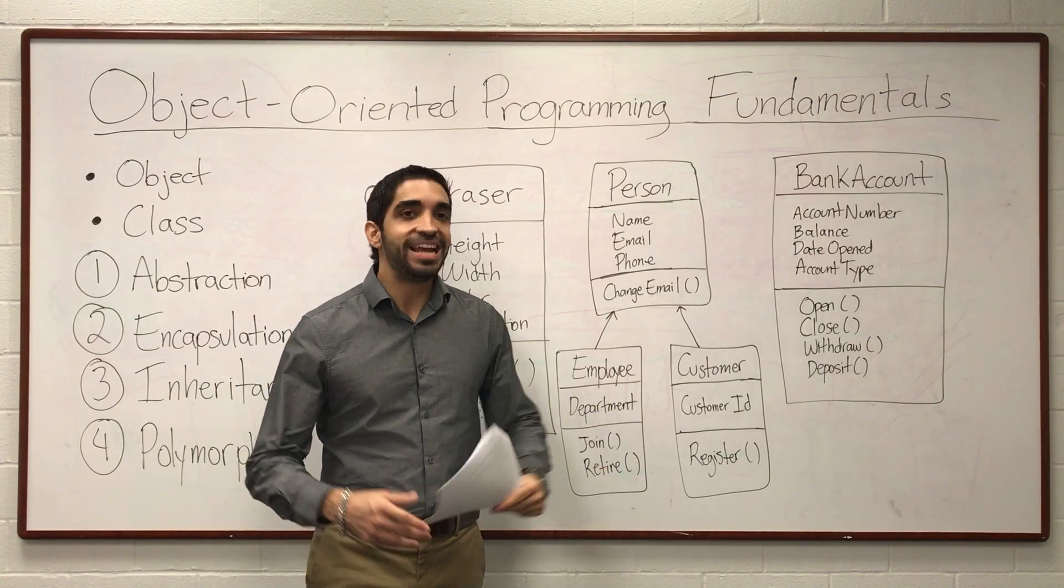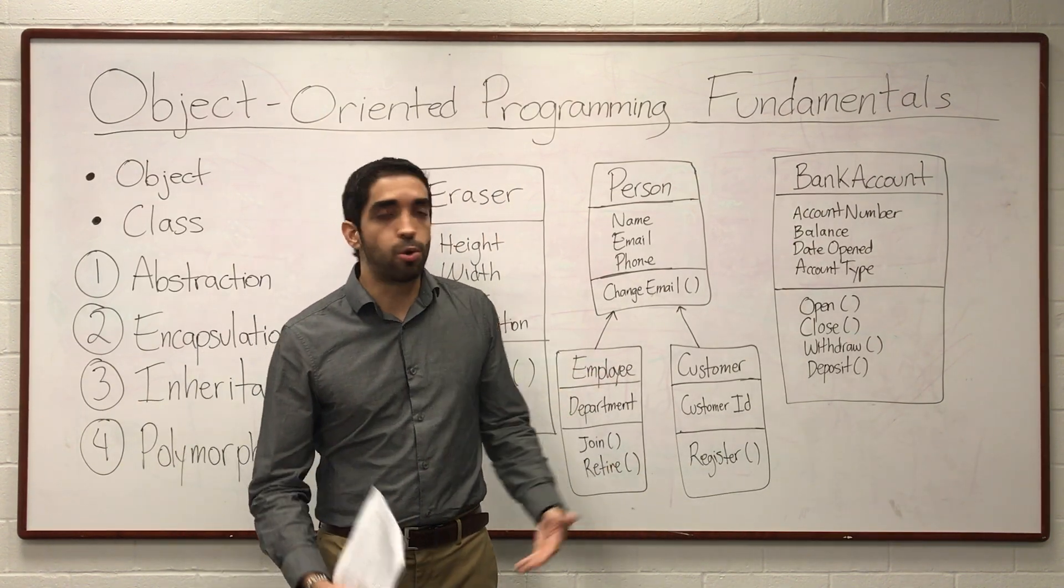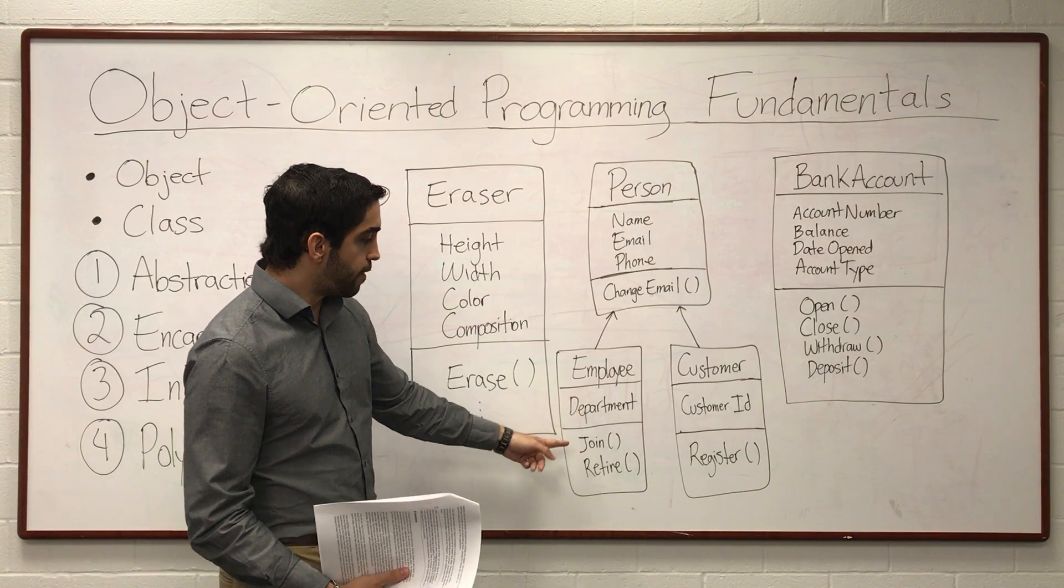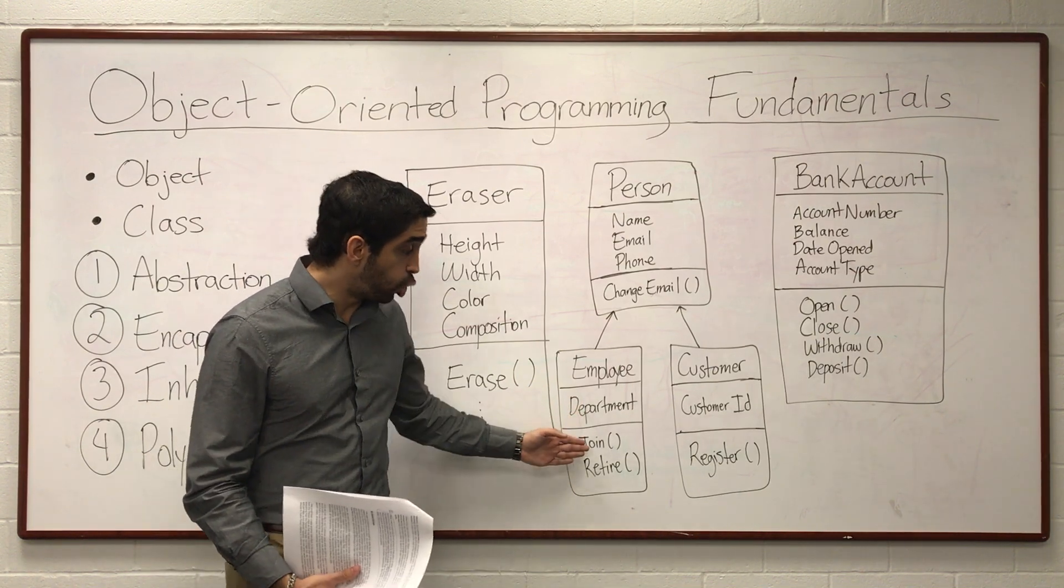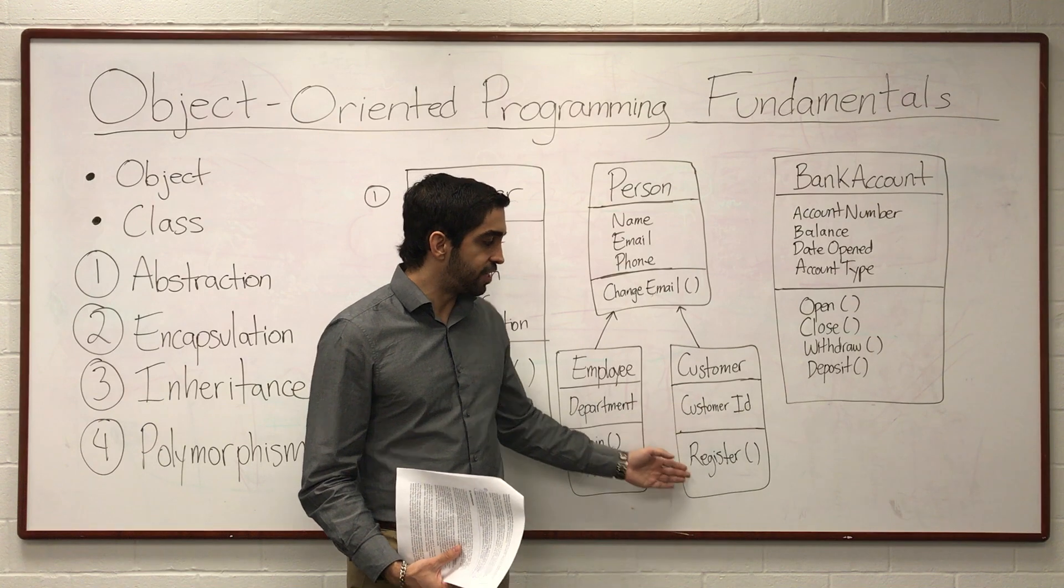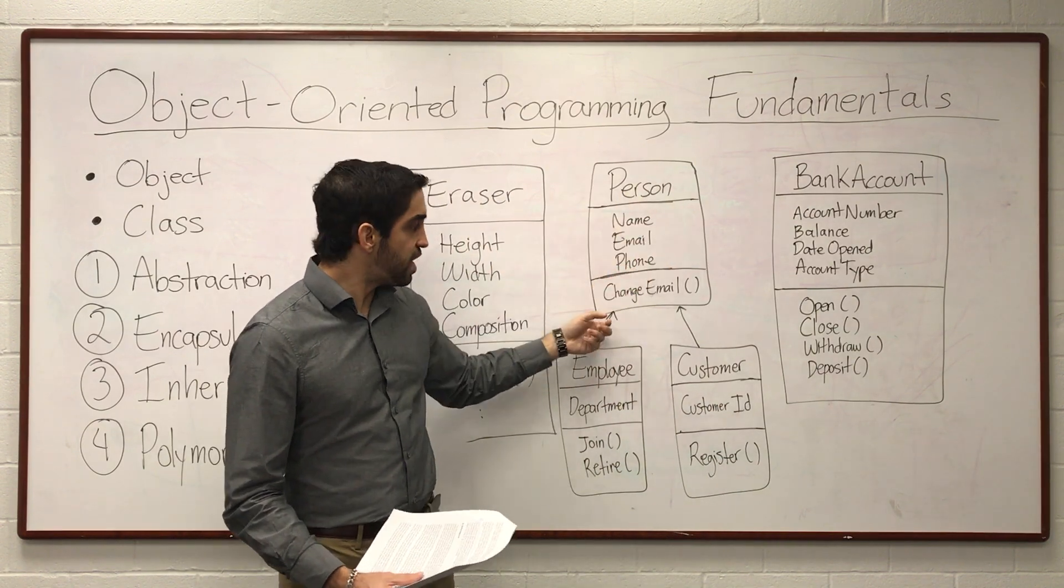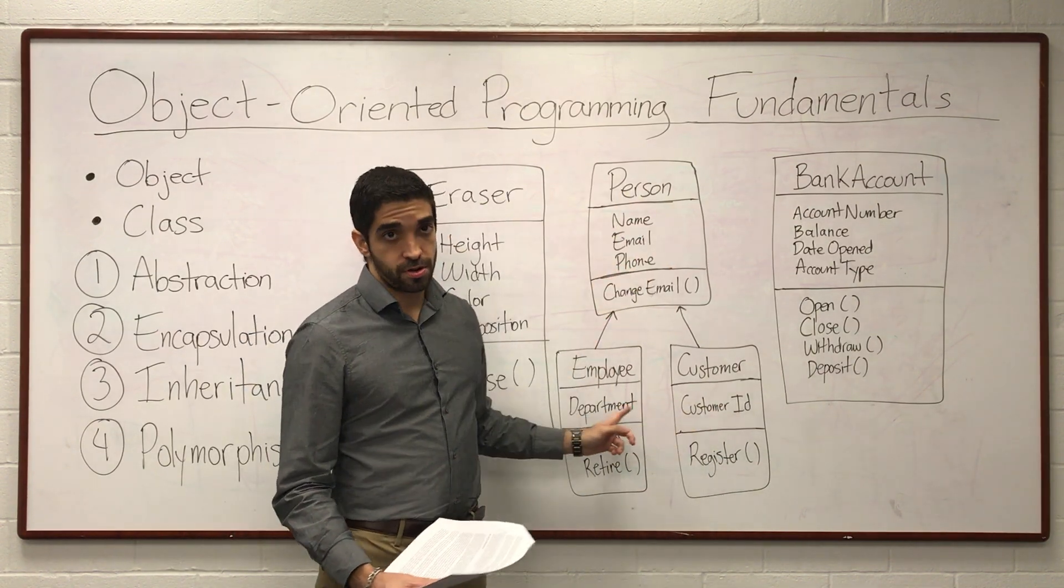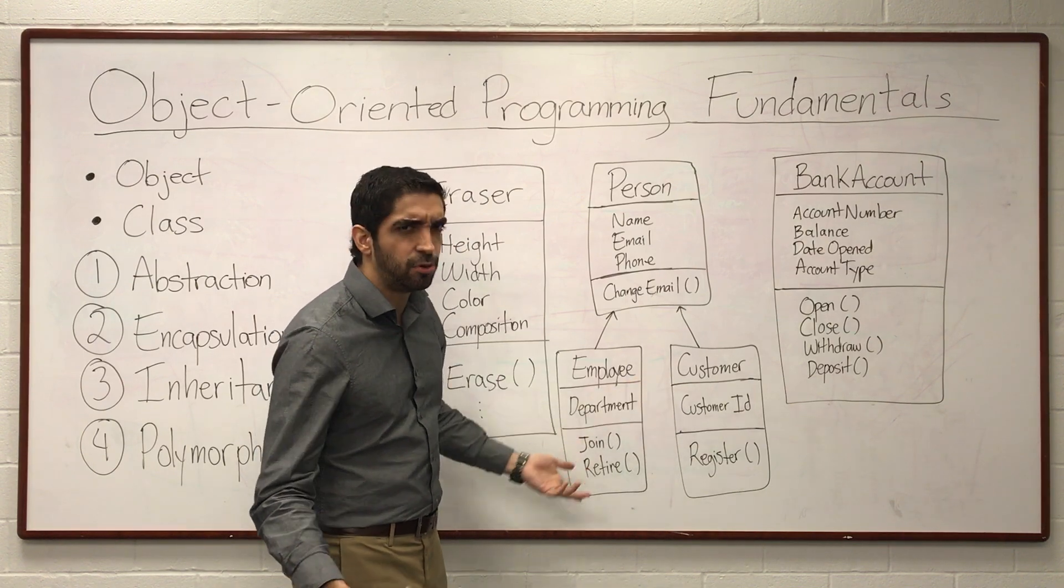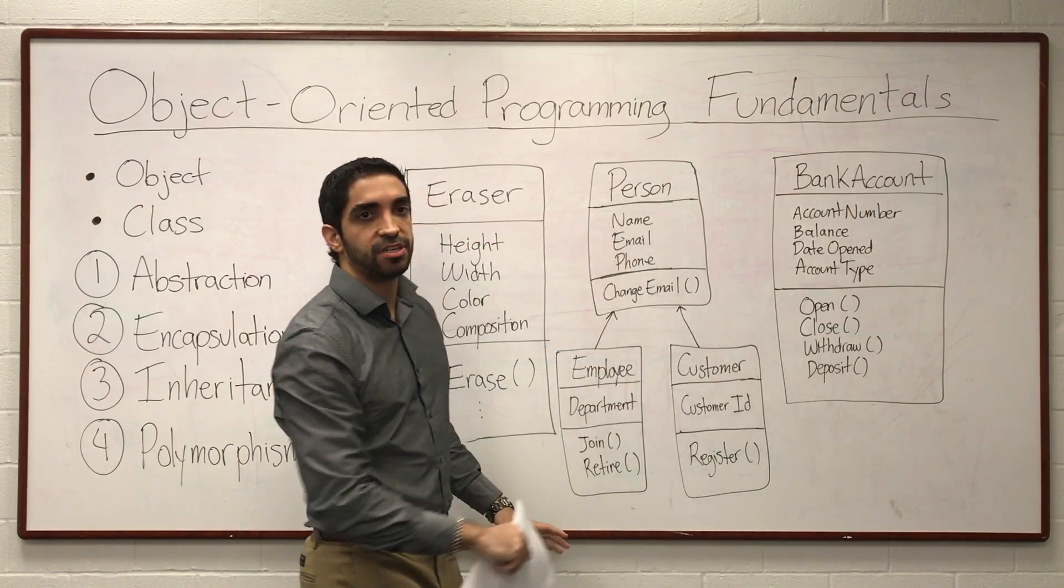Now, these classes might have their own individual properties, custom properties that they need. For example, an employee might have a department property. Where's the employee? Marketing department, IT, business development. Where is the employee, right? And it might have methods, for example, like join the department or join the company, retire. That's specific to the employee. And then you have a customer which might have their own, like, you know, register, and an employee doesn't register. There's different processes. So they share properties and methods, but they have their own. For example, in this case, it doesn't make any sense for the customer to have a department property because they're two different things. So they have their own properties and methods, and they both have the common thing that they inherit from the parent class here.